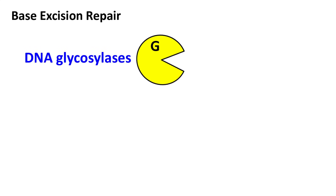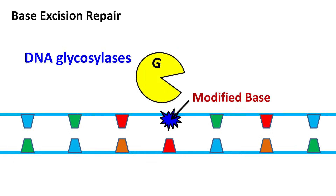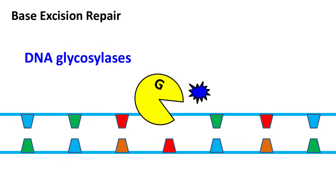The enzyme involved in this repair mechanism is DNA glycosylase. The DNA glycosylase identifies the modified base and removes it out of the double helix.